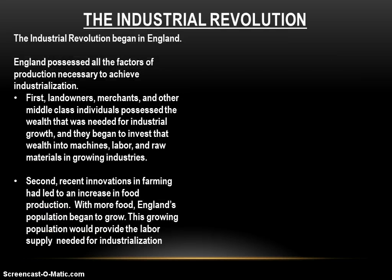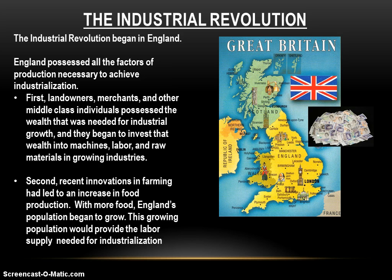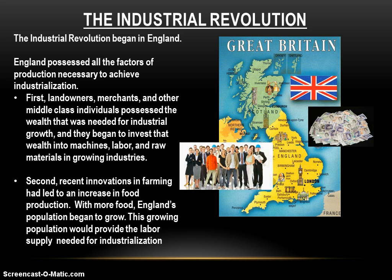When the Industrial Revolution begins, it eventually begins in England, because England possesses all those factors. All the factors of production necessary to achieve industrialization existed in England at this time. First, there were plenty of landowners, merchants, and other middle-class individuals who had the wealth — the capital — needed to begin industrialization. As you get towards the middle and latter part of the 1700s, they start to invest that wealth into new machines, labor, and raw materials in the growing industries of England. Second, innovations in farming led to an increase in food production, England's population began to grow, and that growing population provided the labor supply needed for industrialization.